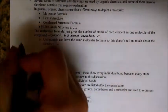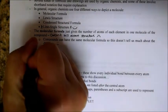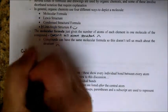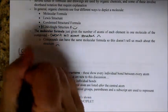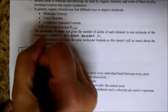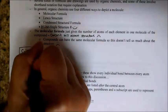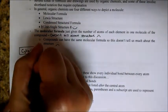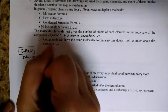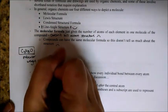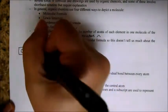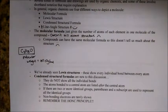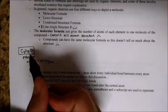Let's say we isolated a random compound and threw it on the mass spectrometer, which we will learn about, and figured out that it has a molecular formula of C3H8O. We determined its molecular weight to be 60.10 grams per mole, and then we can use spectrometry techniques to confirm that it has a molecular formula of C3H8O.